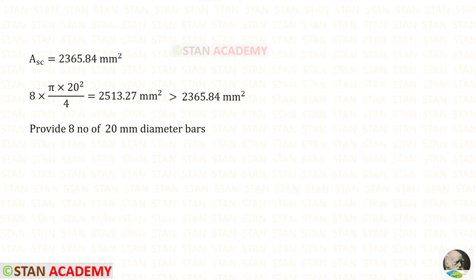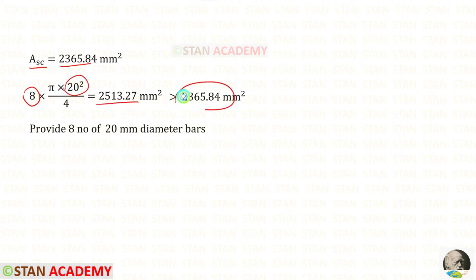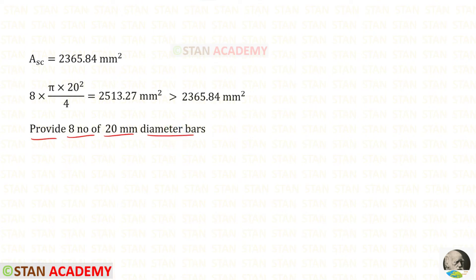For the area of steel we have obtained the required value. Using trial and error method, we can find bar combinations giving approximately equal area. Providing 8 numbers of 20 millimeter diameter bars gives approximately the required area. So let us provide 8 numbers of 20 millimeter diameter bars. You can try different numbers and diameters, but they should follow certain conditions.